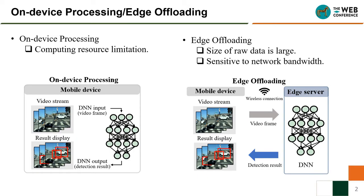Deep neural networks have been the state-of-the-art solution in recent years for many mobile applications, such as face recognition. There are two common methods to deal with DNN-based mobile applications: on-device processing and edge offloading.